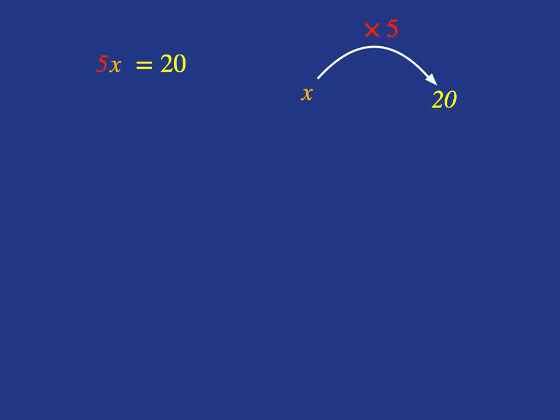We want to solve the equation. That means we want to get x on its own. We want to get back to the x, so we need to do the inverse operation, and the inverse of multiply is dividing. In an equation, what we do to one side, we must do to the other. So let's divide both sides of the equation by 5.